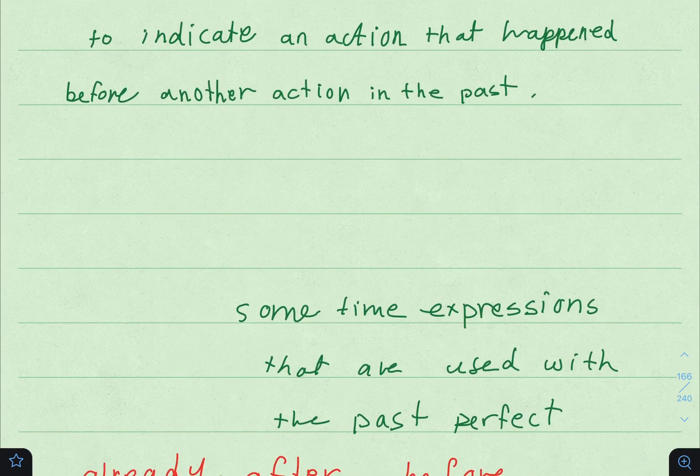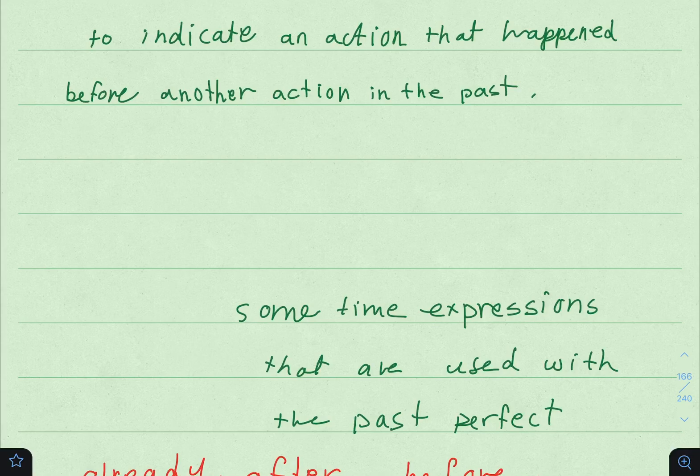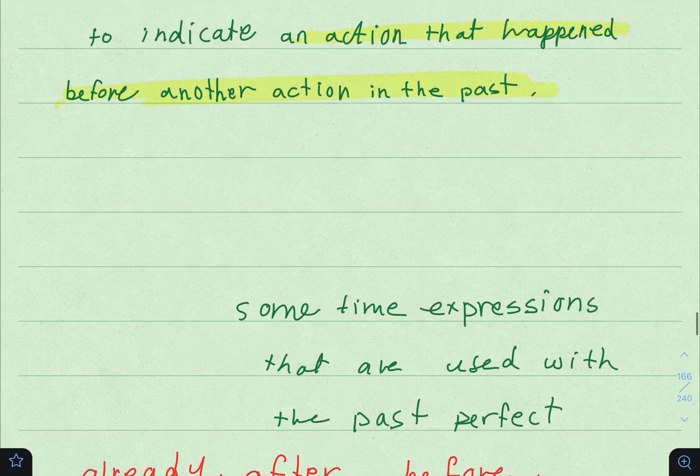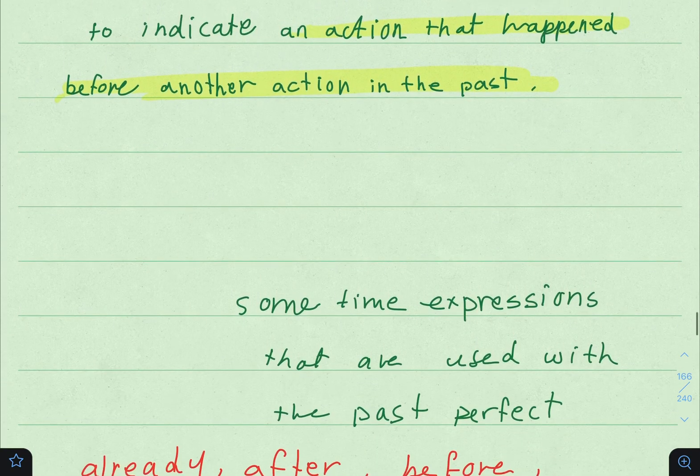We use the Past Perfect to indicate that an action happened before another action in the past. نستخدم الـ Past Perfect عشان نوضح أن هذا الحدث حصل قبل حدث آخر في الماضي. In other words, we say past in the past - الماضي في الماضي.